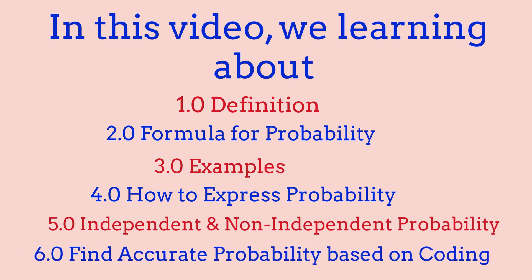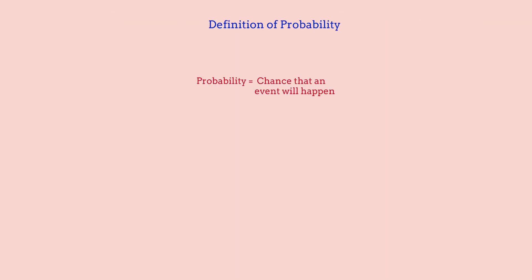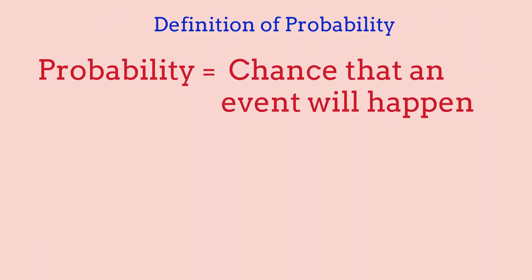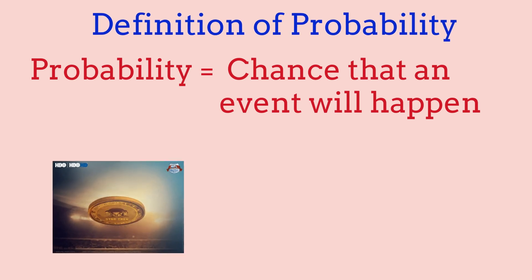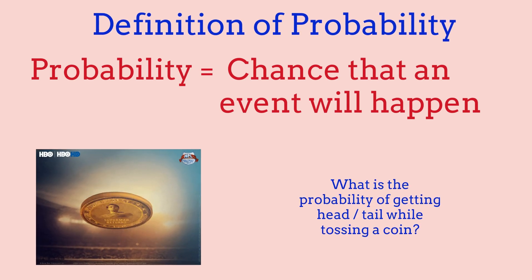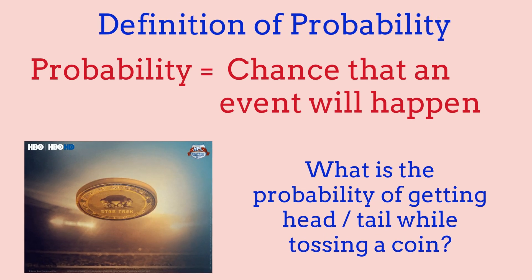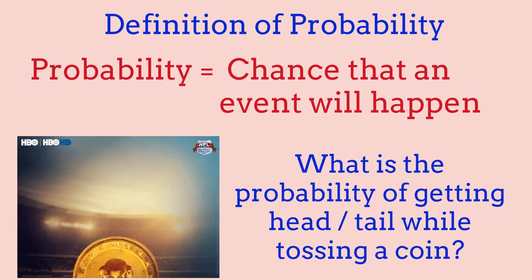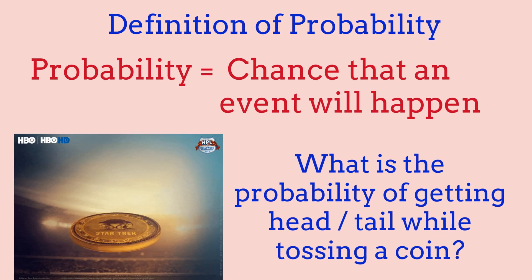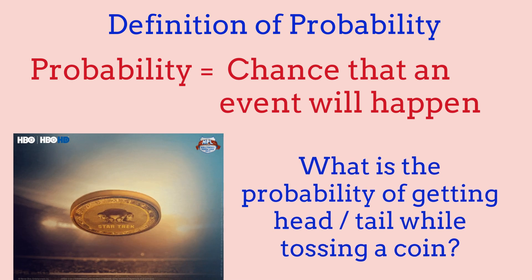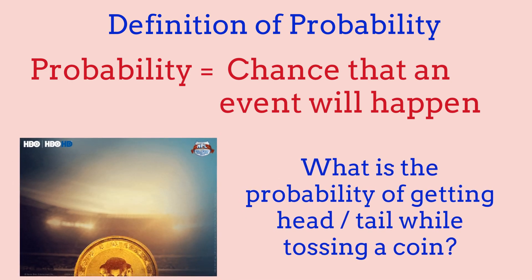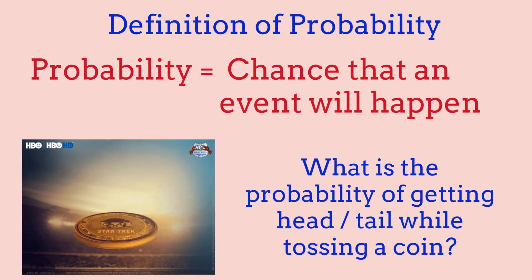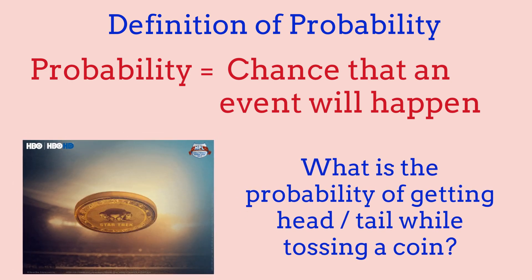Let's get started with our probability definition. Probability is basically a chance that some event will happen. For example, what is the chance of flipping heads on a coin? Probability is used all over the world for many different things, and sometimes it can be a very tricky topic.